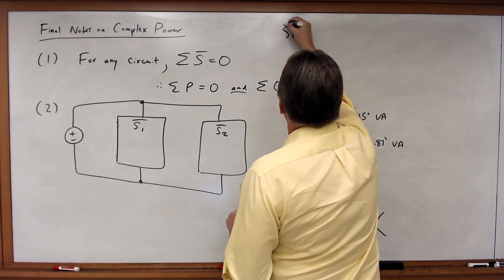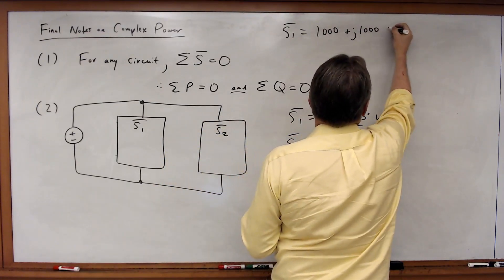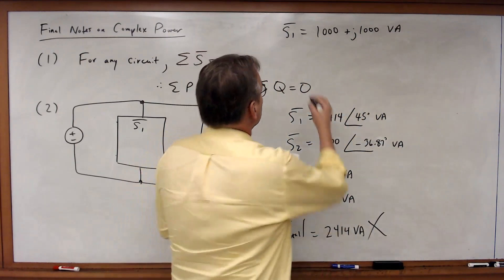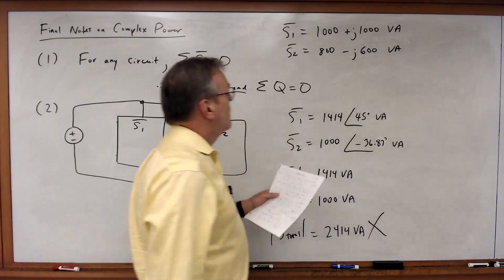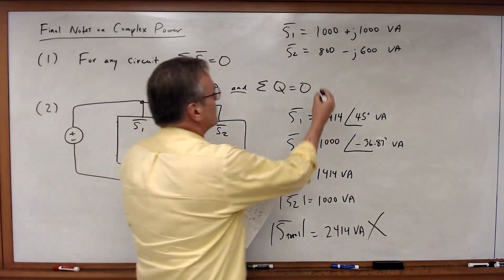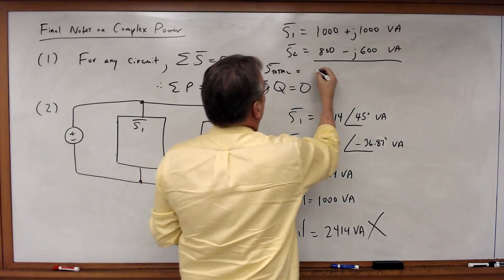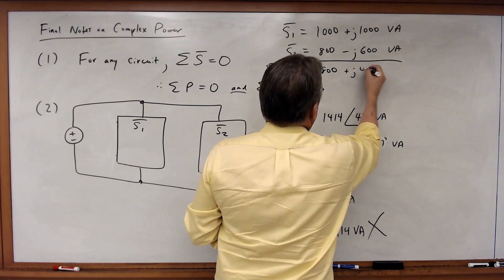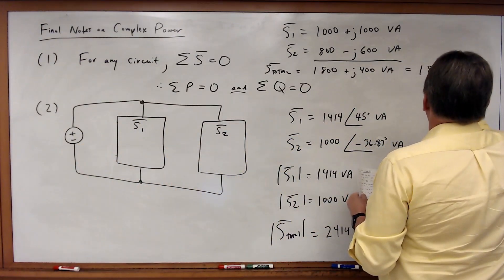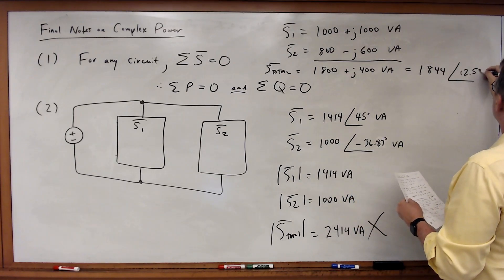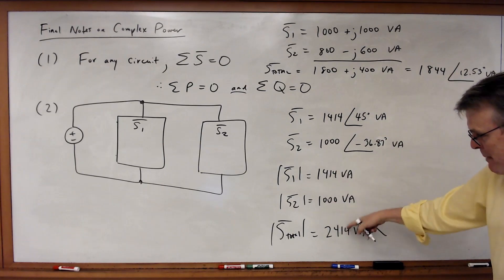So in this case, S1, convert this to rectangular form, will be equal to 1000 plus j1000 VA. S2 will be equal to 800 minus j600 VA. So now if I want to add those two complex powers together, I'm going to add the real plus the imaginary part. So S total is therefore equal to 1800 plus j400 volt amperes, which will then be equal to 1844 at a phase angle of 12.53 degrees volt amperes.